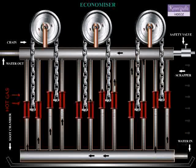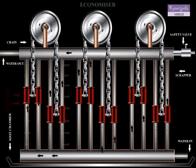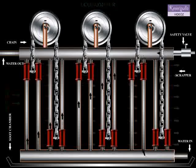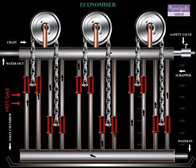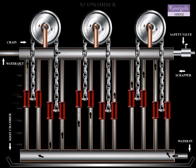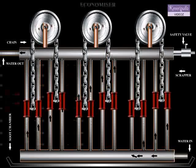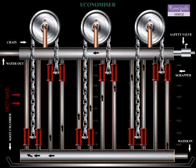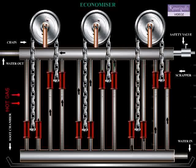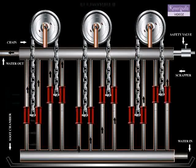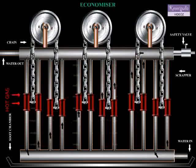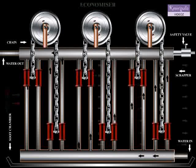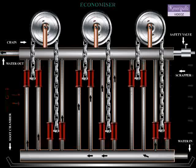A blow-off valve is also fitted at the lowest point of the economizer to discharge sediments collected from the feed water. To prevent the deposition of soot from the flue gases over the economizer tubes, a set of scrappers is fitted over the pipes as shown in the figure.